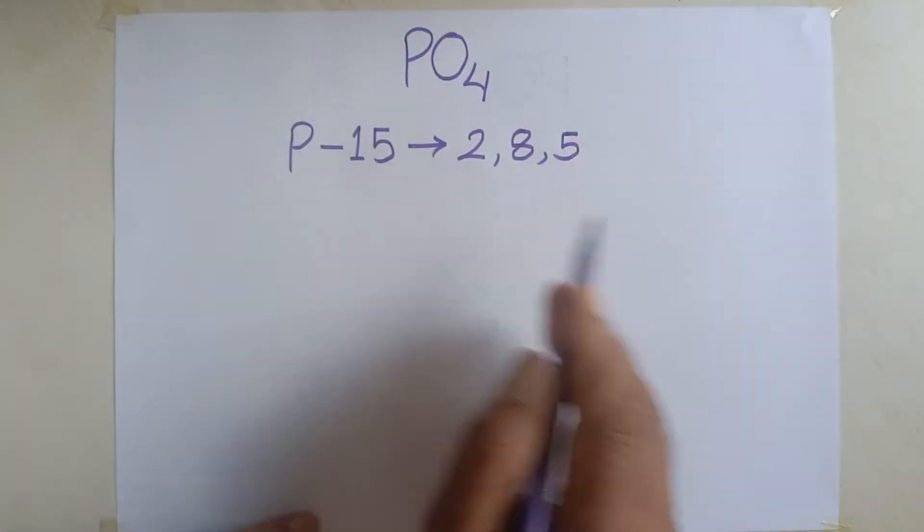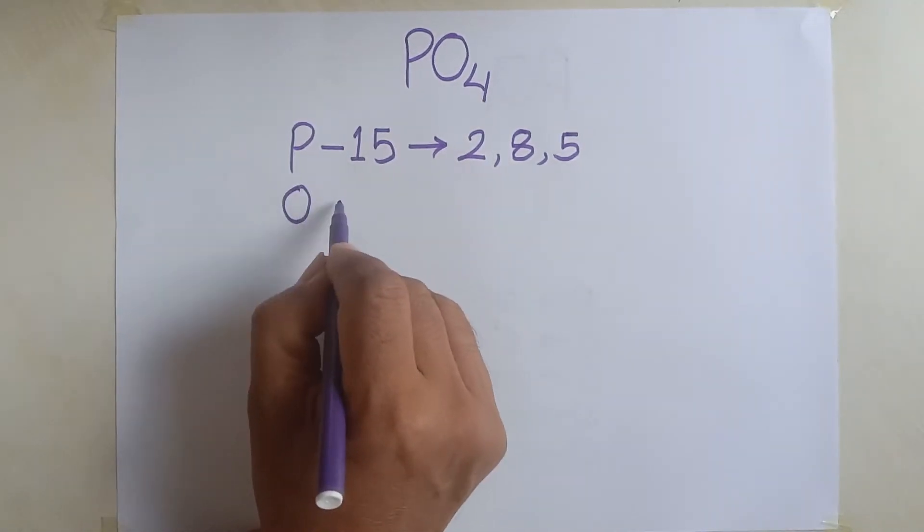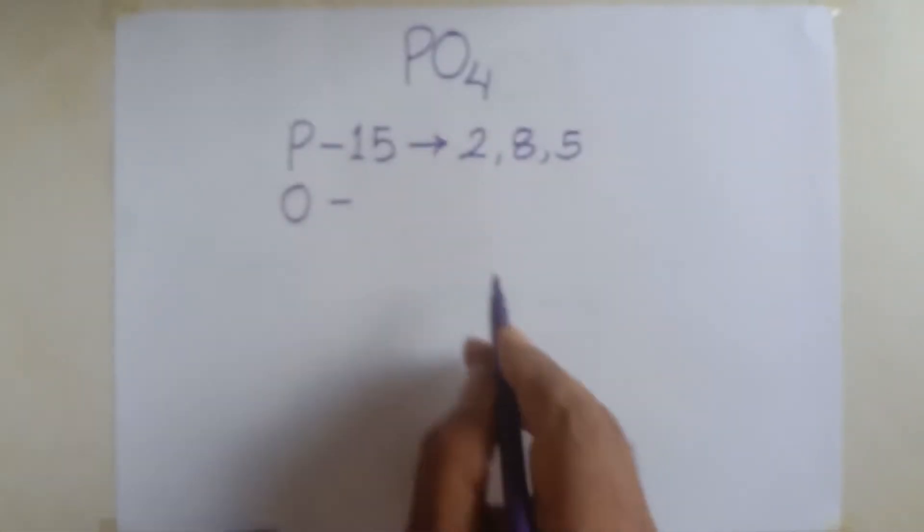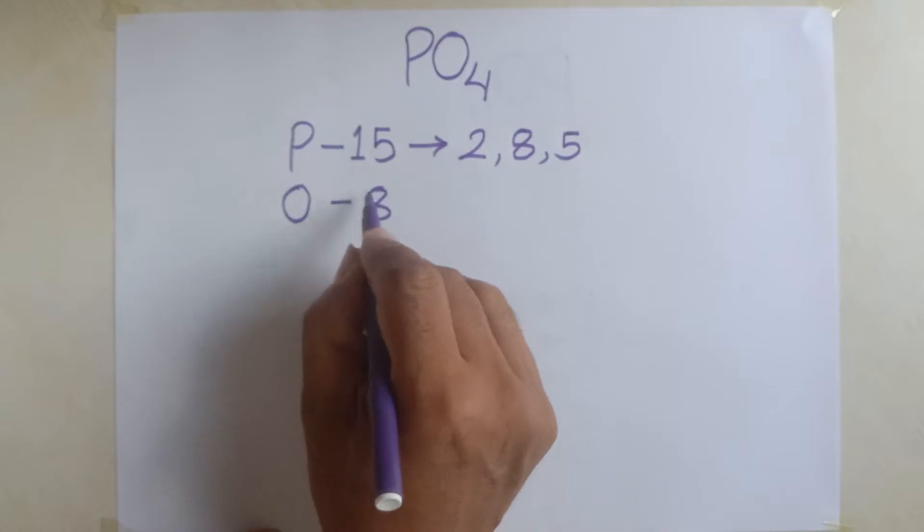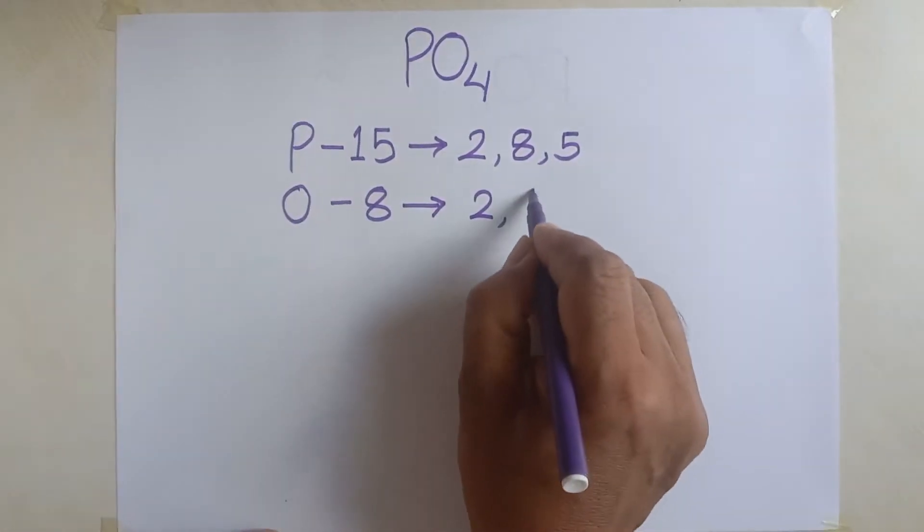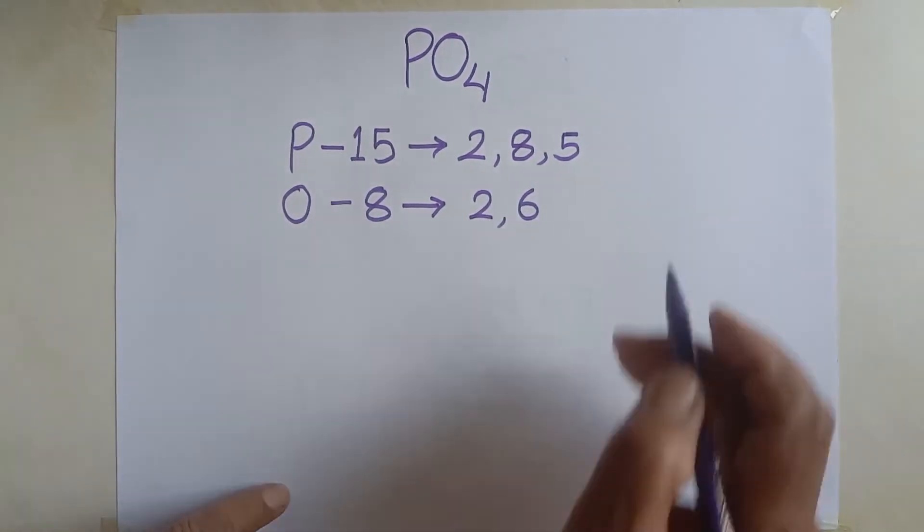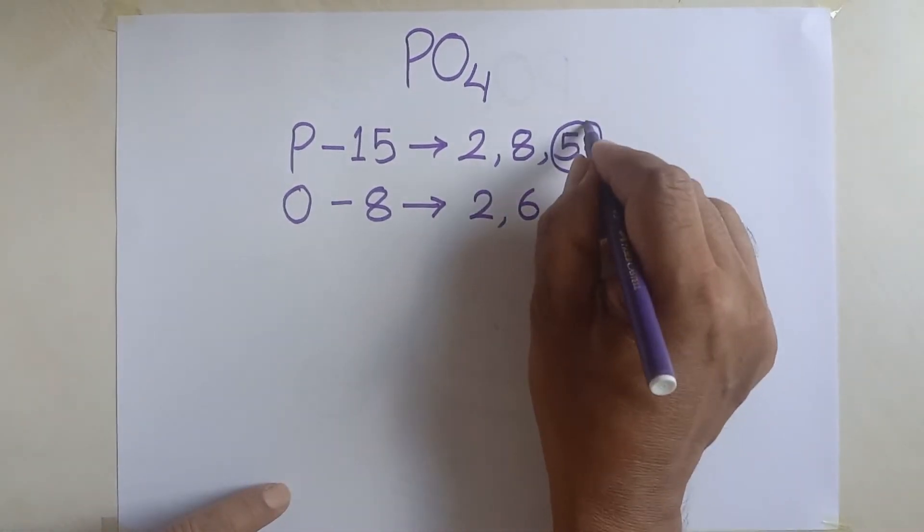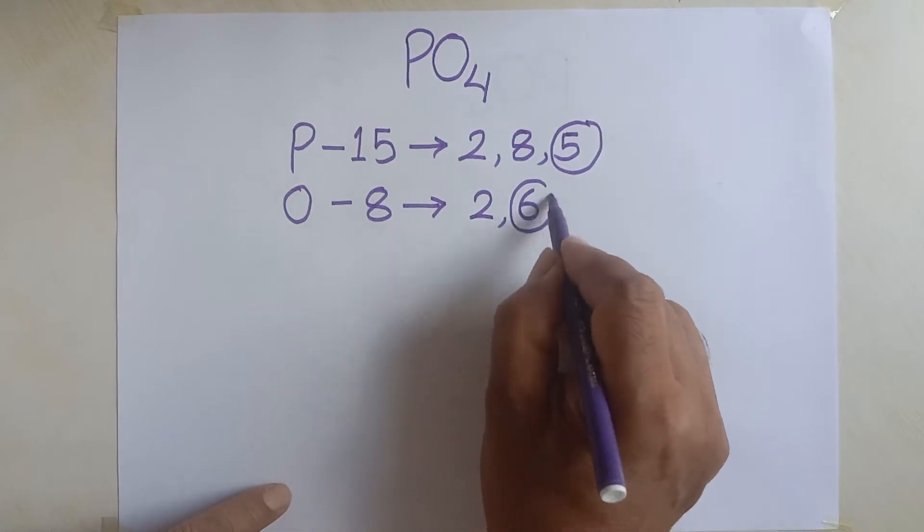Now, in case of oxygen, look at this, oxygen has got eight electrons and it is distributed this way. First orbit contains two electrons and remaining six in second electron. It means, this is the valence electron of phosphorus and this is the valence electron of oxygen.